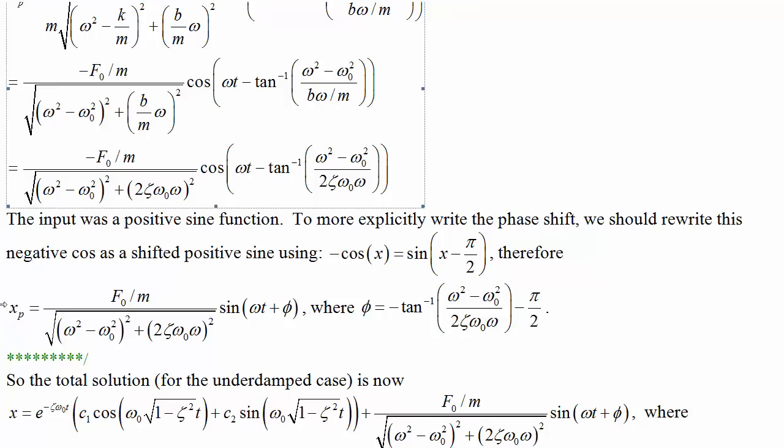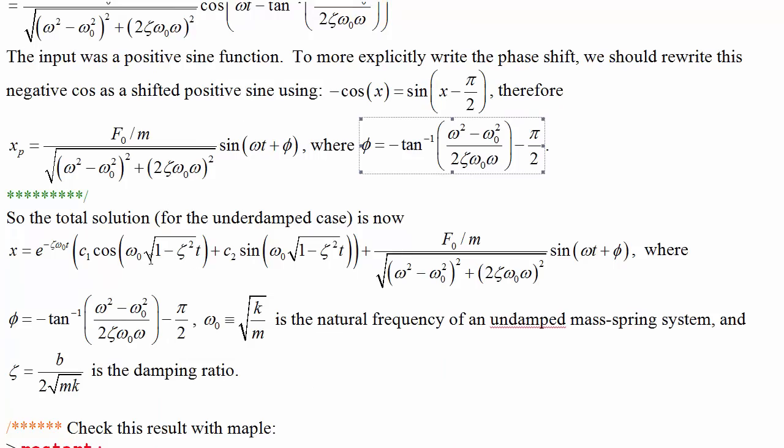We can take this to be xp equal to, getting rid of the negative, this thing, sine ωt + φ, where now φ is negative the arctan of the difference in these frequencies divided by this damping and frequency-dependent term minus π/2. In other words, the total solution is this term we had before.